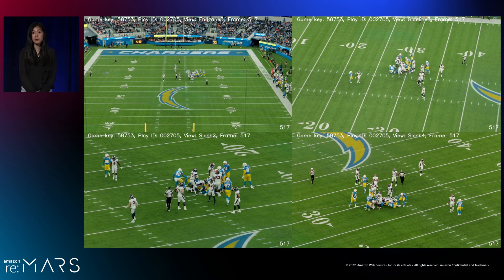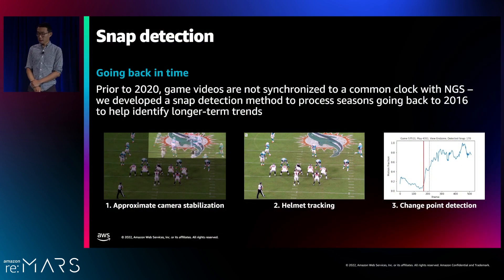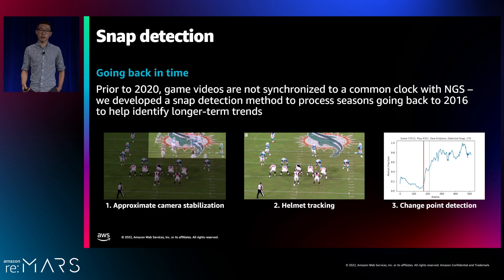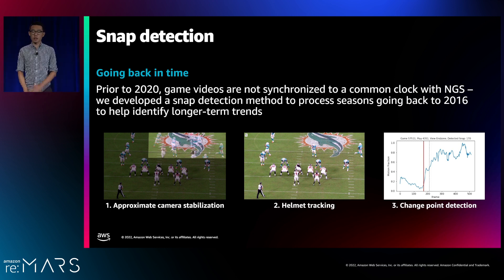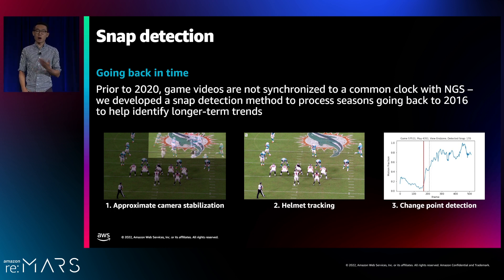Now I'll pass it on to Jarvis to talk about Snap Detection and how we scaled up the solution. At this point, we've established a set of models that can robustly detect and assign helmet impacts to individual players, creating an exposure dataset for every game and play. However, we want the ability to go back in time to establish long-term exposure trends for individual NFL players across seasons — for about as long as the NFL has collected the NGS dataset — in order to help inform future mitigations for the league.